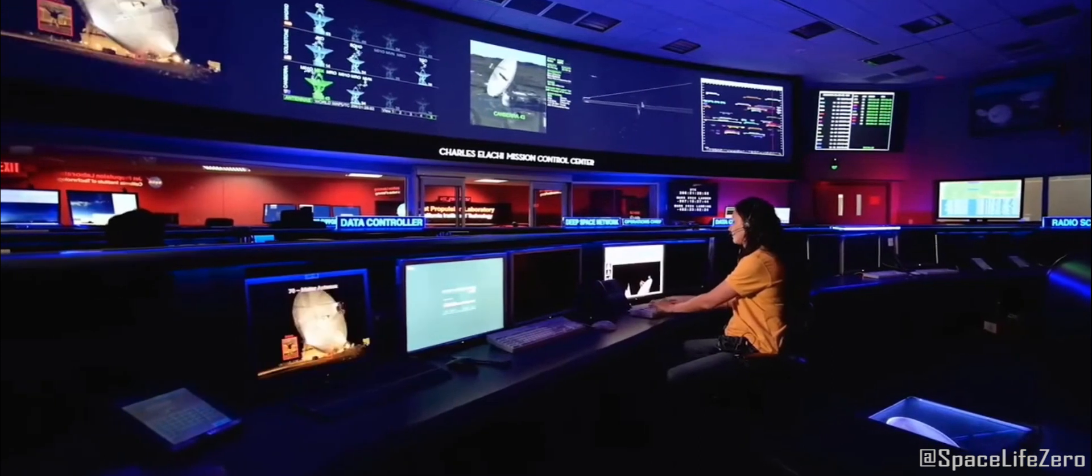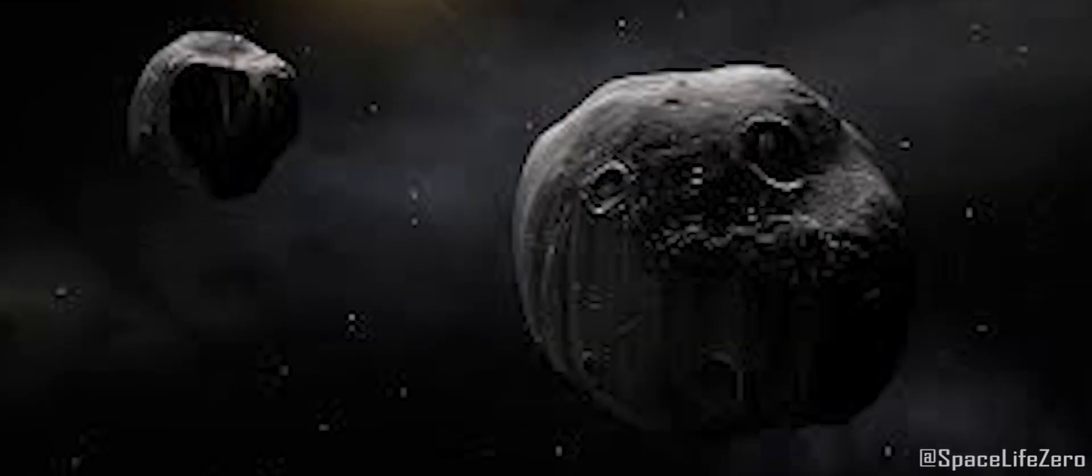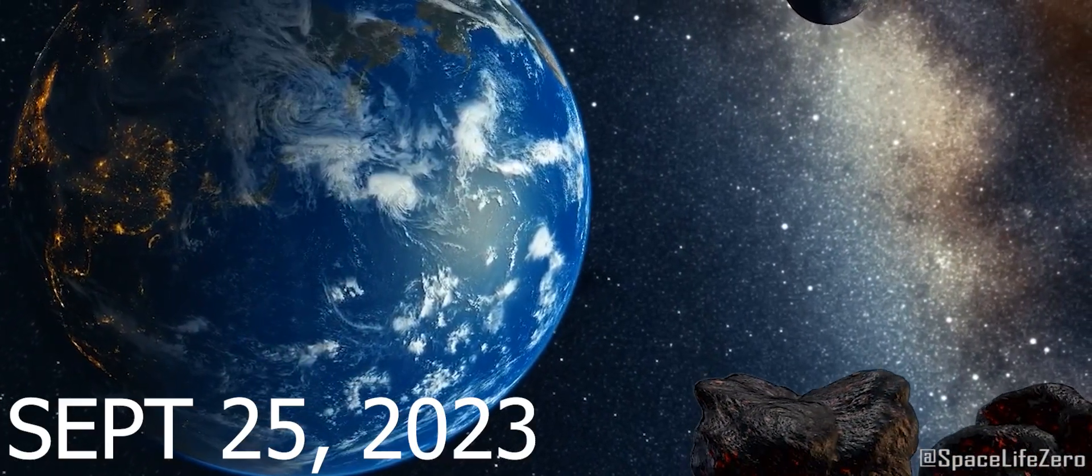According to information received from NASA's Jet Propulsion Laboratory, two asteroids traveling at high speed are coming close towards our planet on September 25, 2023.